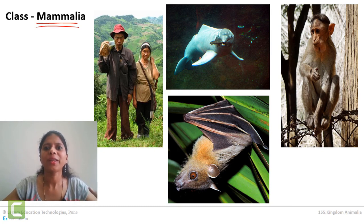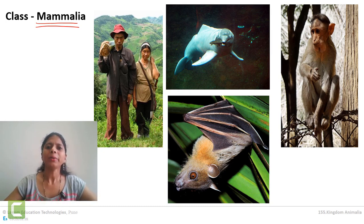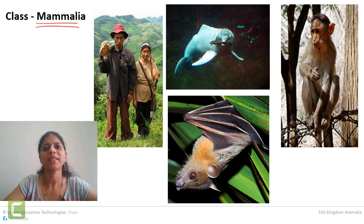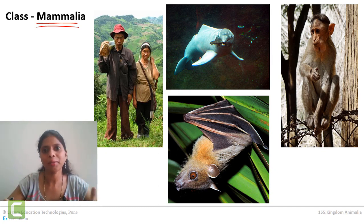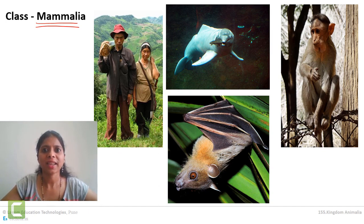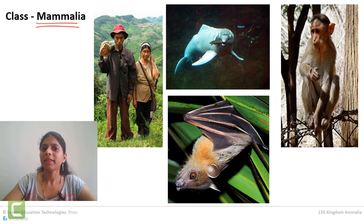Other animals which fall under Mammalia are cow, dog, tiger, lion, and many others — even the rat. All of them come under Class Mammalia. As I told you, these are the most advanced animals and they show the most advanced characteristics among the animal kingdom.